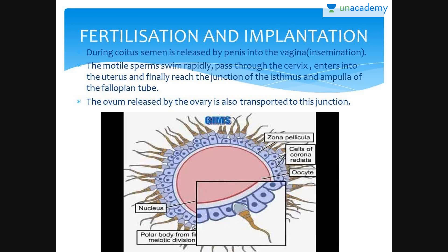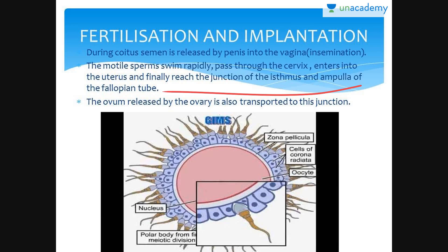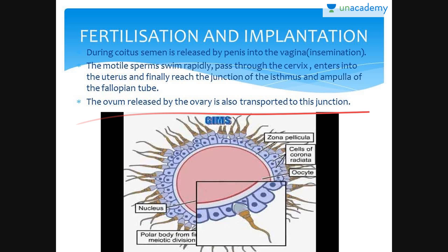During coitus, semen is released by the penis into the vagina — this is known as insemination. The motile sperms swim rapidly, pass through the cervix, enter the uterus, and finally reach the junction of the isthmus and ampulla of the fallopian tube. The ovum released by the ovary is transported to this junction.